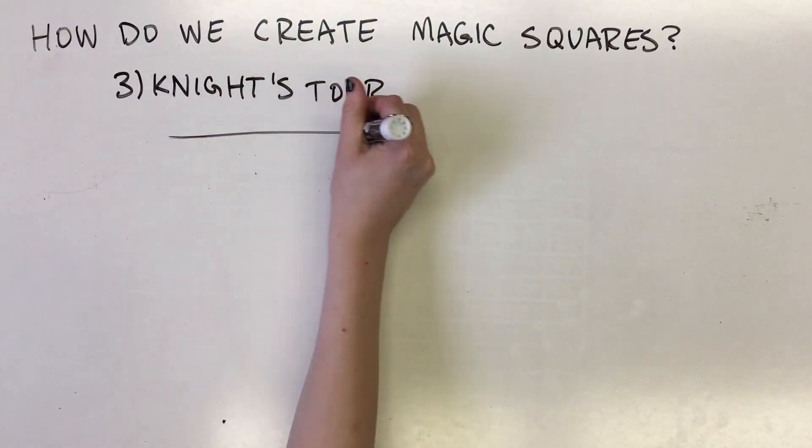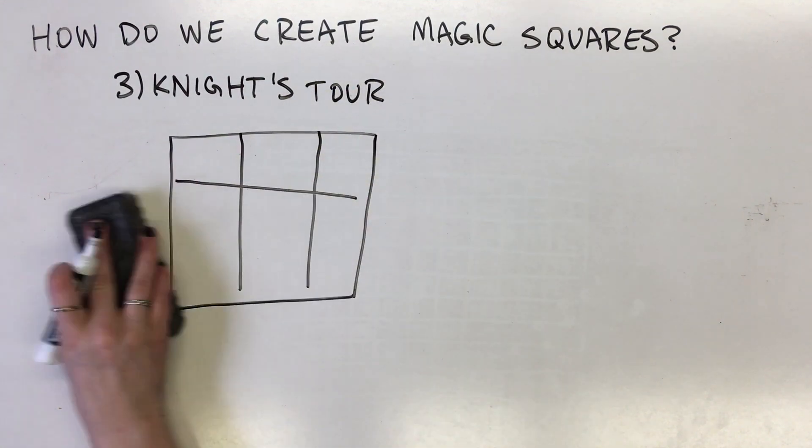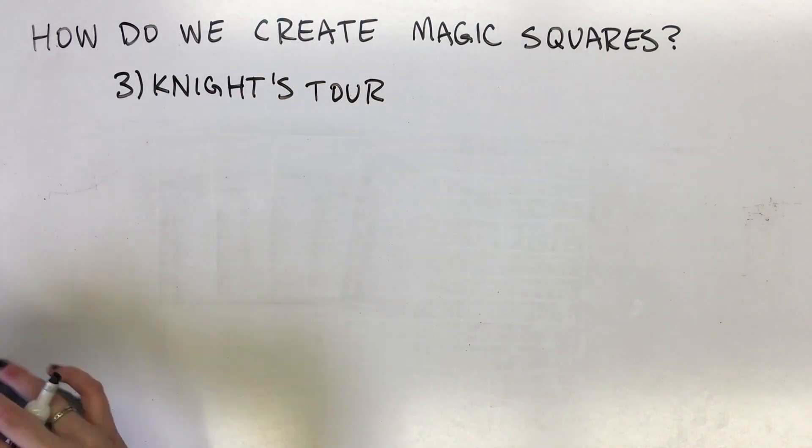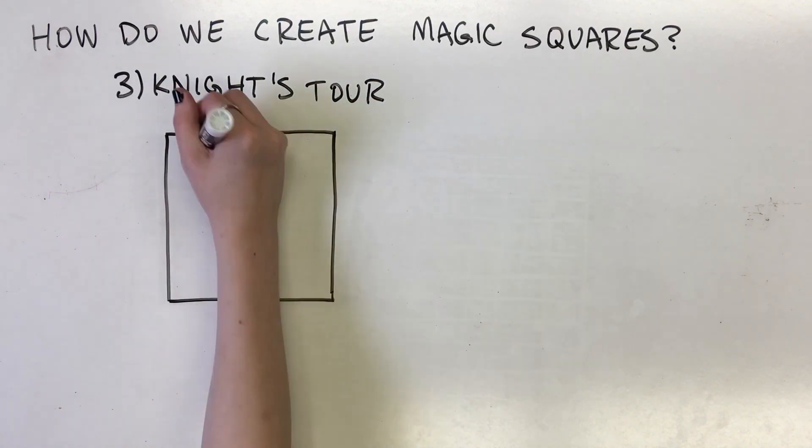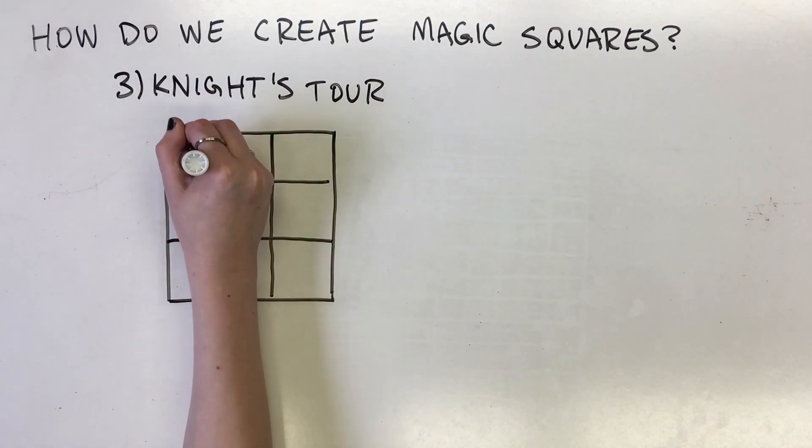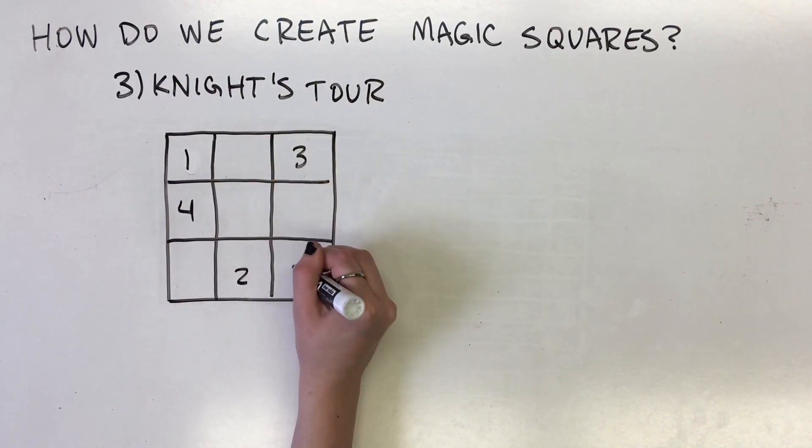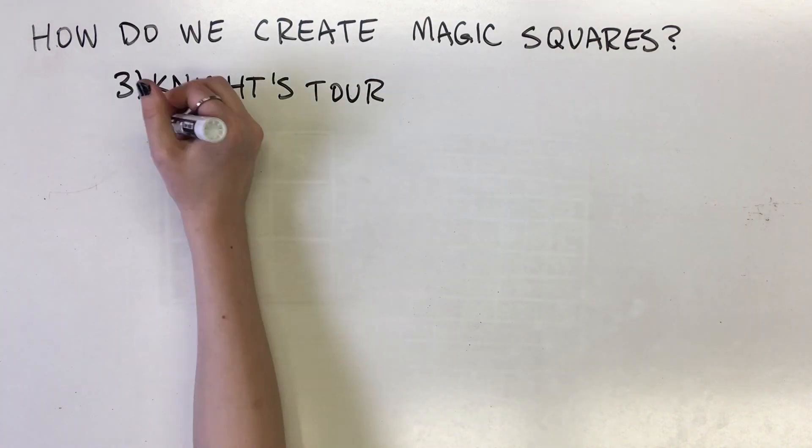A seemingly completely unrelated problem to the magic squares is the knight's tour. On an n-by-n board, is it possible for a knight to visit each tile once? A path that satisfies this condition is called the knight's tour.